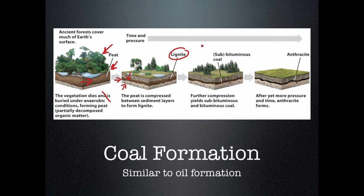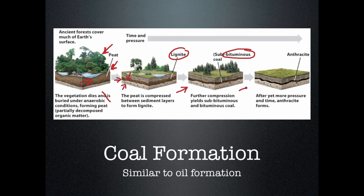Lignite is the lowest grade of coal — it releases the least energy and is the dirtiest burning. Subject lignite to more pressure and heat over time and it becomes bituminous coal, the middle grade: middle-of-the-road pollution and energy output. Keep pressing bituminous coal and you get anthracite — the premium coal. Anthracite is the most energy-dense and burns the cleanest, though it's still coal so it still burns dirty. In summary: swamp plants pressed over time gives you the different grades of coal.